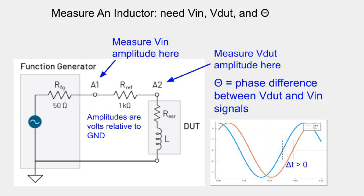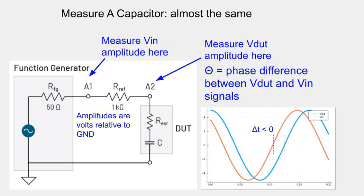VIN is the amplitude of the signal measured at point A1, and VDUT is the amplitude of the signal measured at point A2. The phase difference is the phase difference between the VDUT and VIN signals. The way you measure that with an oscilloscope is to measure the time between rising edges — specifically, the time between the rising edge of VDUT and the rising edge of VIN. For an inductor, that time will be positive. You can then compute the phase difference by dividing the time difference by the period of the test signal.